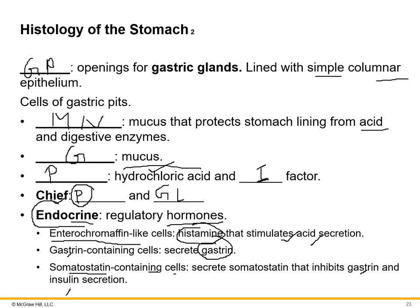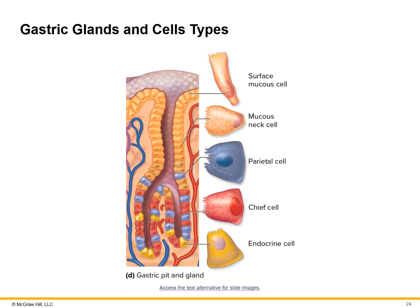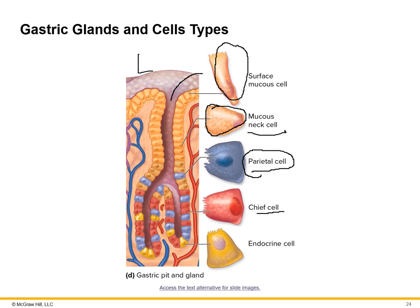Here is an illustration (not a micrograph) showing the gastric pit organization. At the surface are regular mucus cells and goblet cells. Deeper are mucus neck cells secreting thick viscous mucus. Further down are parietal cells (HCl and intrinsic factor), chief cells (gastric lipase and pepsinogen), and at the deepest level, endocrine cells including chromaffin cells, G cells, and others.